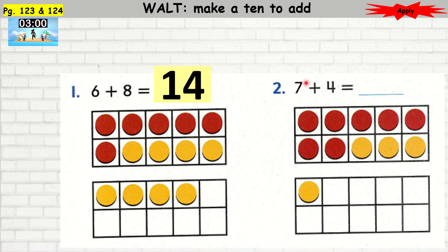Question 2: 7 plus 4. You have 7 red and 4 yellow. How many is that? You have 10 and 1 more. So you have 10 plus 1, which is 11.